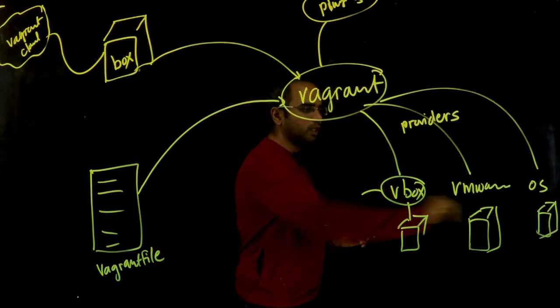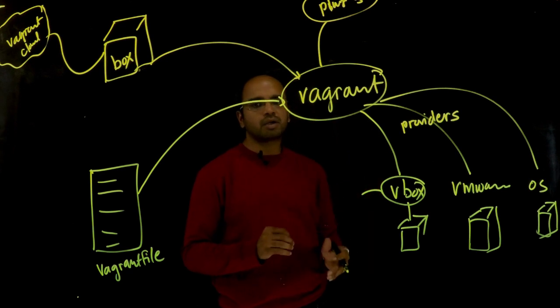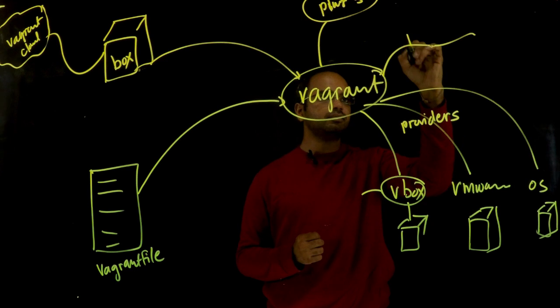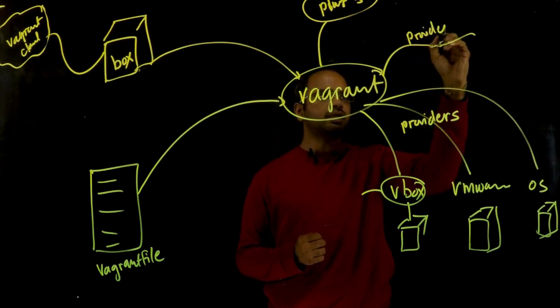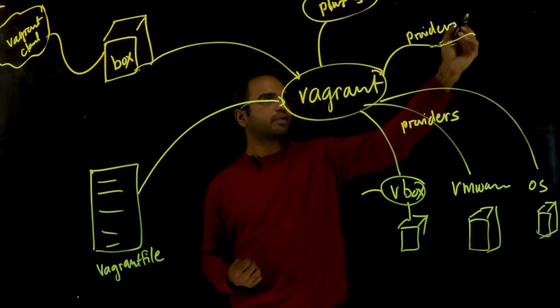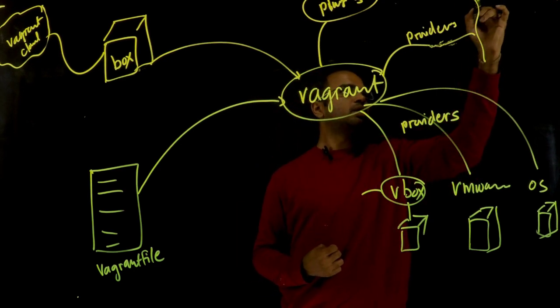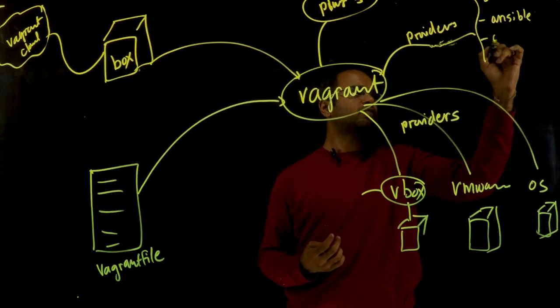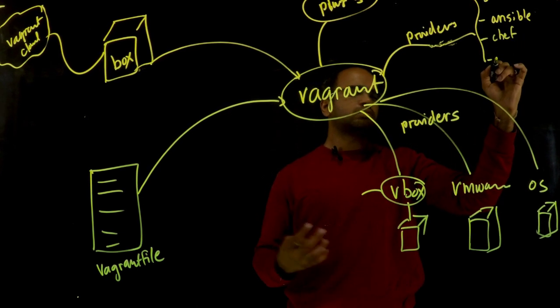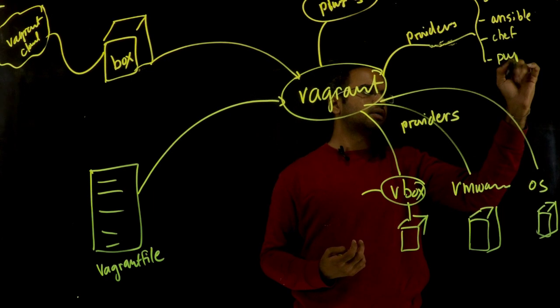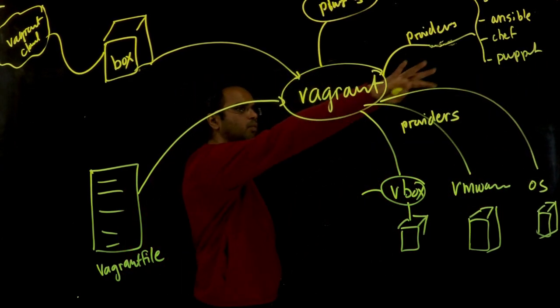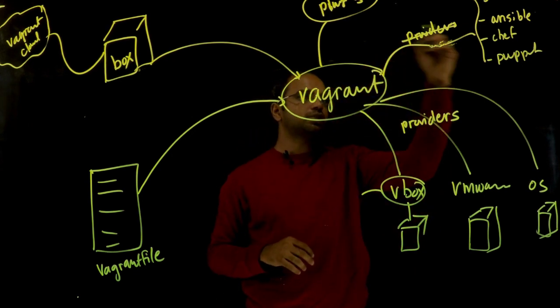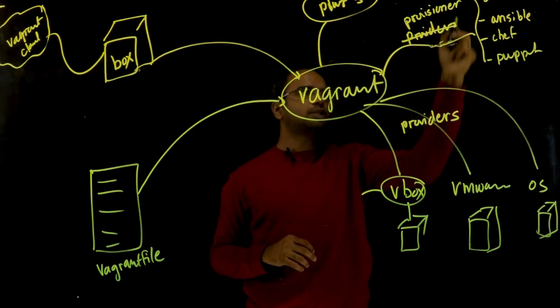One of the key concepts is once you provision those VMs, how do we go about configuring them? Vagrant gives us options using provisioners. Let's say you want to run a shell script, you may create a provisioner for that. The provisioners can use shell scripts or tools like Ansible, Chef, or Puppet. This becomes a framework more or less, because then you have a choice between which provisioner you want to use after bringing up the VM using a certain provider.